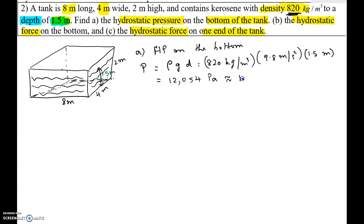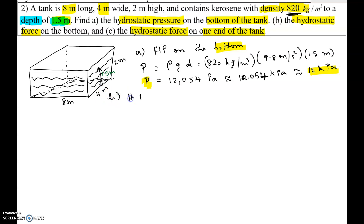We divide by 1000 to get 12.054 kilopascals, which is approximately 12 kilopascals. This is the first part of the problem — the pressure at the bottom of the tank is 12 kilopascals.